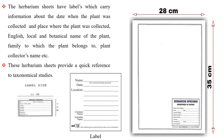The herbarium sheets have labels which carry information about the date and place where the plant was collected, English, local and botanical names of the plant, the family to which the plant belongs, the plant collector's name, etc. These herbarium sheets provide a quick reference to taxonomical studies.